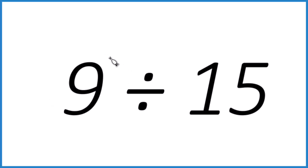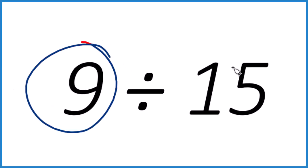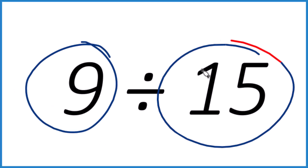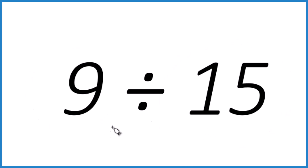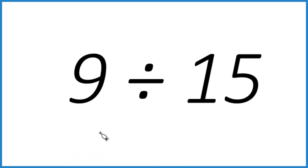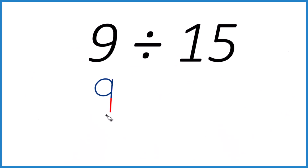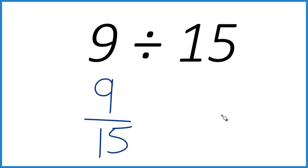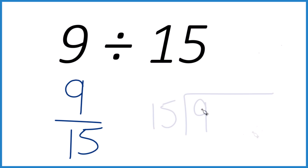This is Dr. B. We're going to divide 9 by 15 using long division. I like to think of 9 divided by 15 as 9 over 15, so we're figuring out how many times 15 goes into 9. Set it up like this.